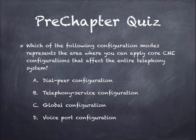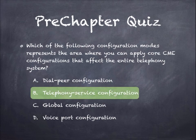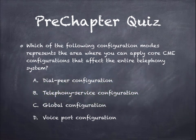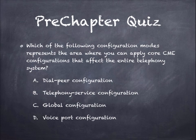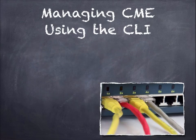The second question: which of the following configuration modes represents the area where you can apply core CME configurations that affect the entire telephony system? The answer is B — telephony service configuration mode. It's a sub-mode of global configuration mode. You would type 'configure terminal' and then 'telephony-service' to reach the sub-mode where you enter telephone commands. You'll be learning to do that in the labs for this chapter.